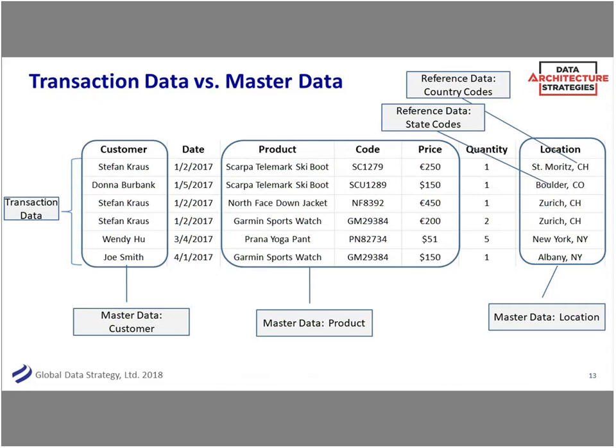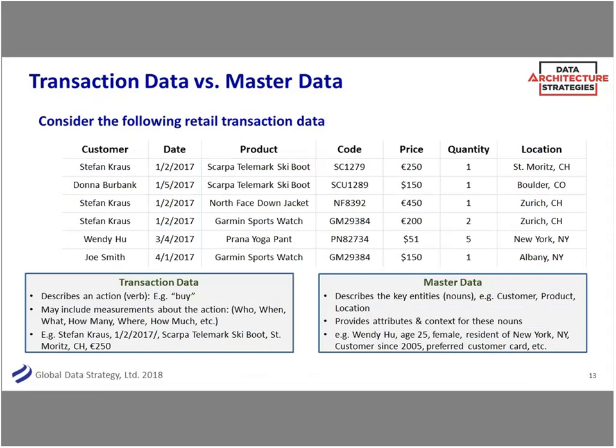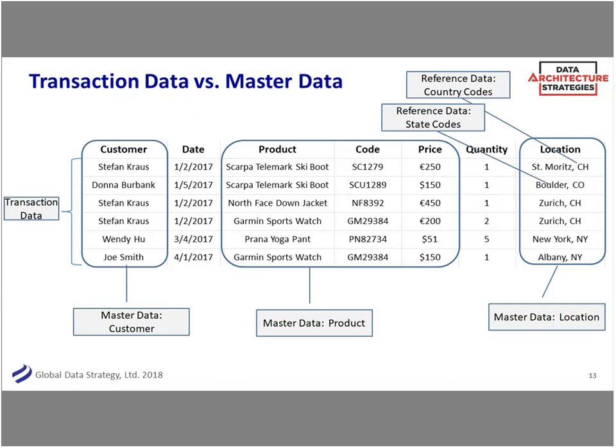From transaction data you can start to build out the nouns — more of the who. Who is the customer? Who is the product? What location are those around? Build out the attributes: Donna Burbank lives in Boulder, Colorado; Stefan Krauss lives in St. Moritz, Switzerland. You have either master data, transaction data, or reference data. The master data would be the customers — Wendy Hu, John Smith, Stefan Krauss, Donna Burbank — and also product master data: what are the core product codes, are your product codes different in Europe than in the U.S., are there hierarchies between those codes?